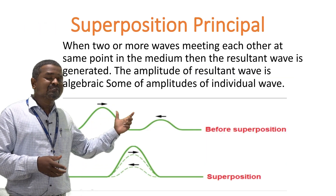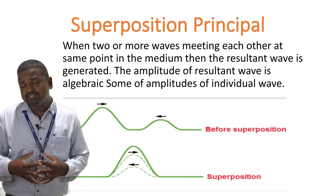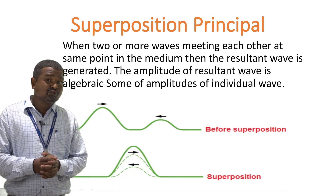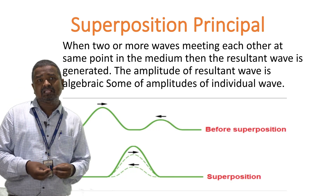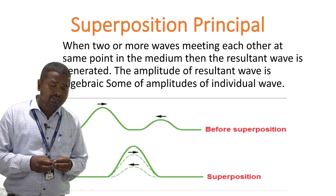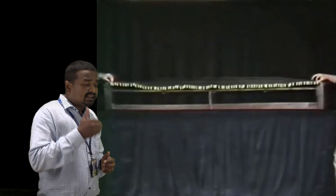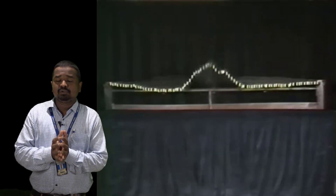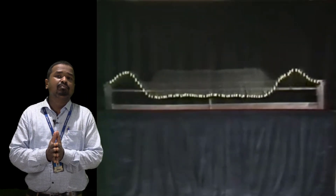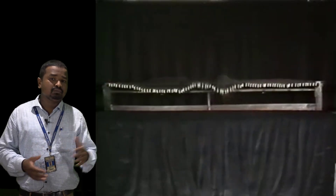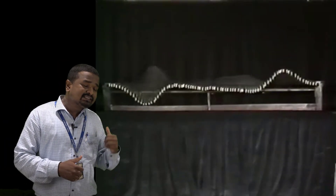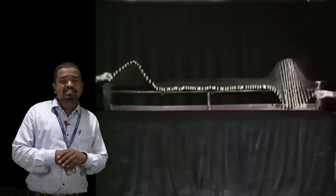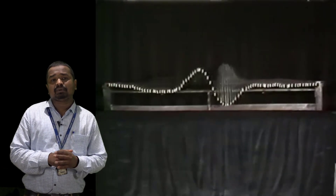We have to understand what superposition is. In the superposition principle, two or more waves meet each other in the medium at the same time, and a resultant wave is generated. That resultant wave has an amplitude which is the algebraic sum of the amplitudes of the individual waves. You can see a small animation of the superposition principle on the screen.